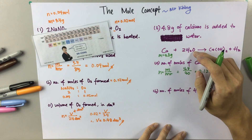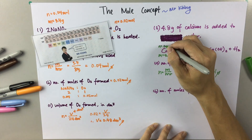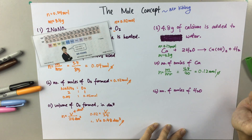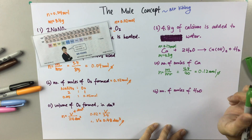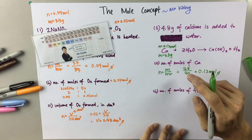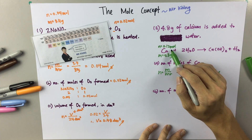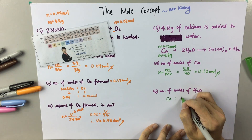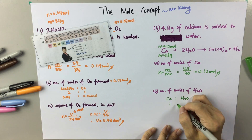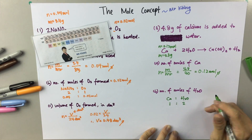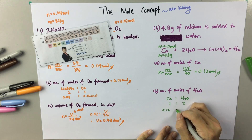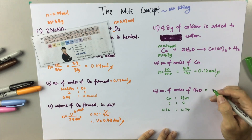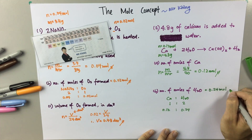Then next, numbers of moles of water. Once you have found the number of moles of one compound in the equation, you can look for the number of moles of the rest based on the ratio. Most of the time in the exam, the questions link to one another. They ask you to look for the number of moles of water — so look for the ratio. Ca to H₂O: the ratio is 1 to 2. So if the number of moles of calcium is 0.12, the number of moles of water will be 0.12 times 2, giving 0.24 moles.